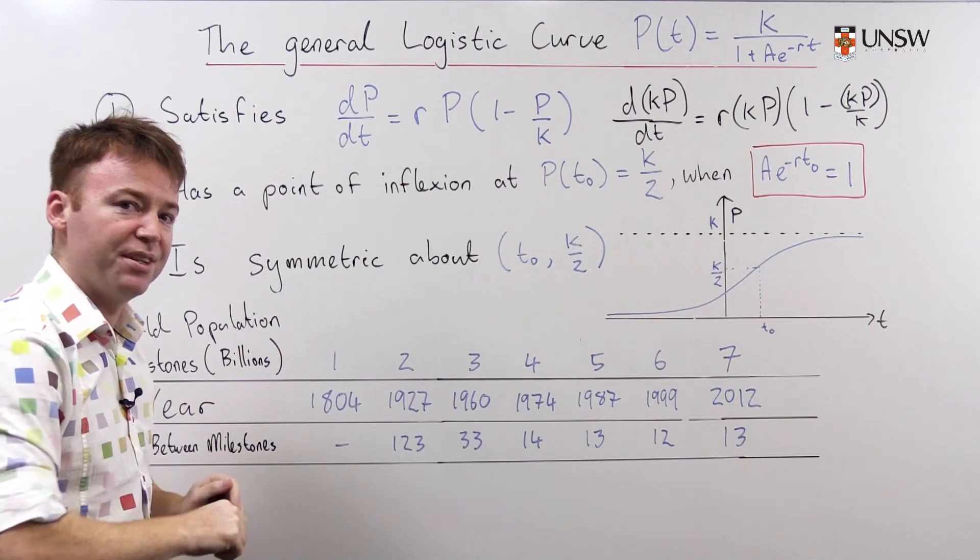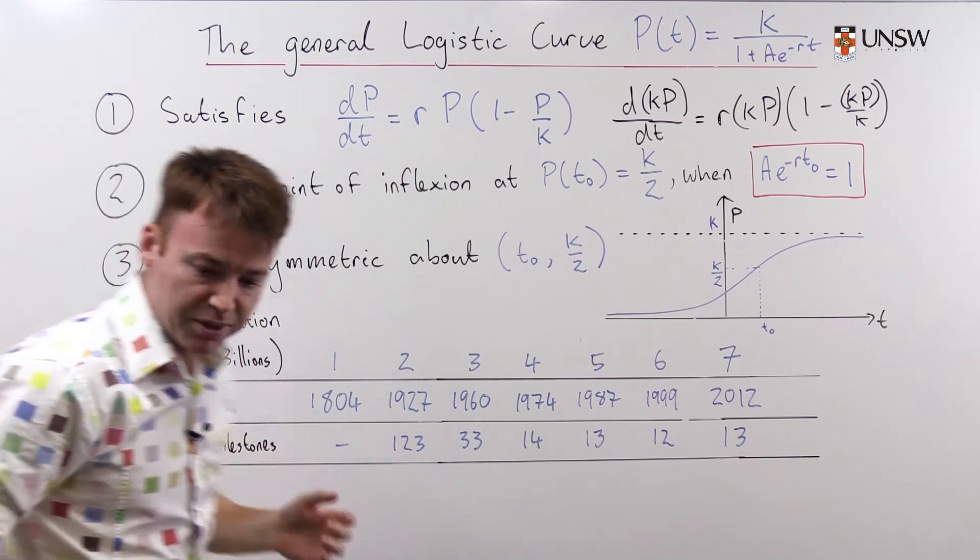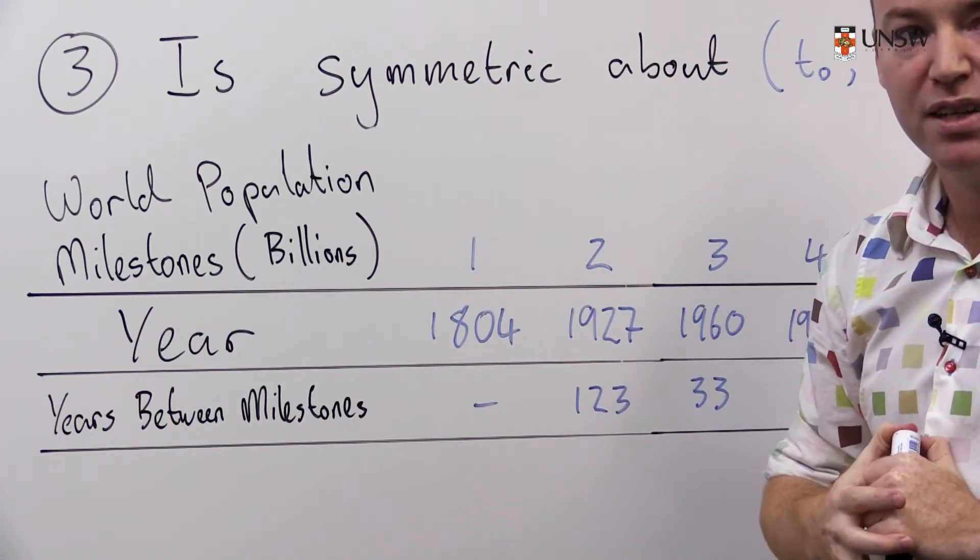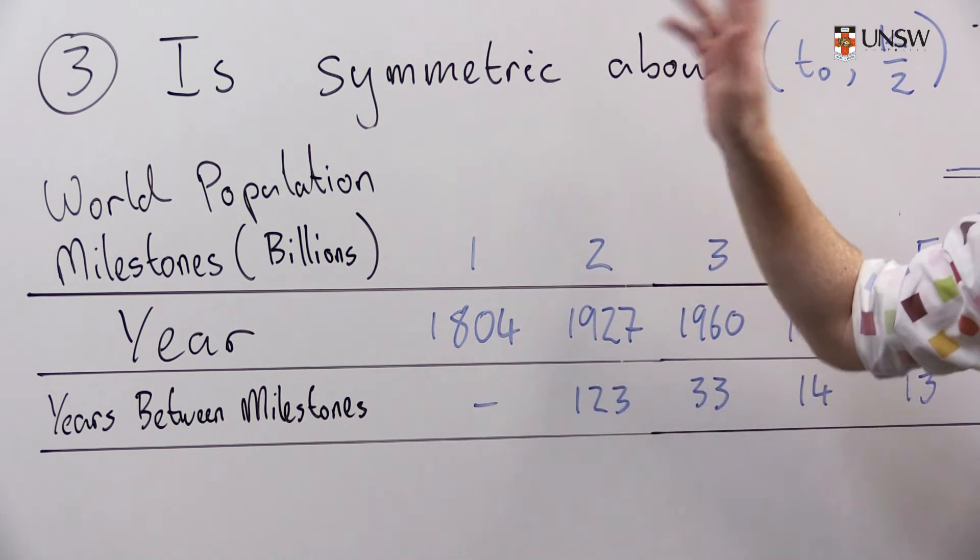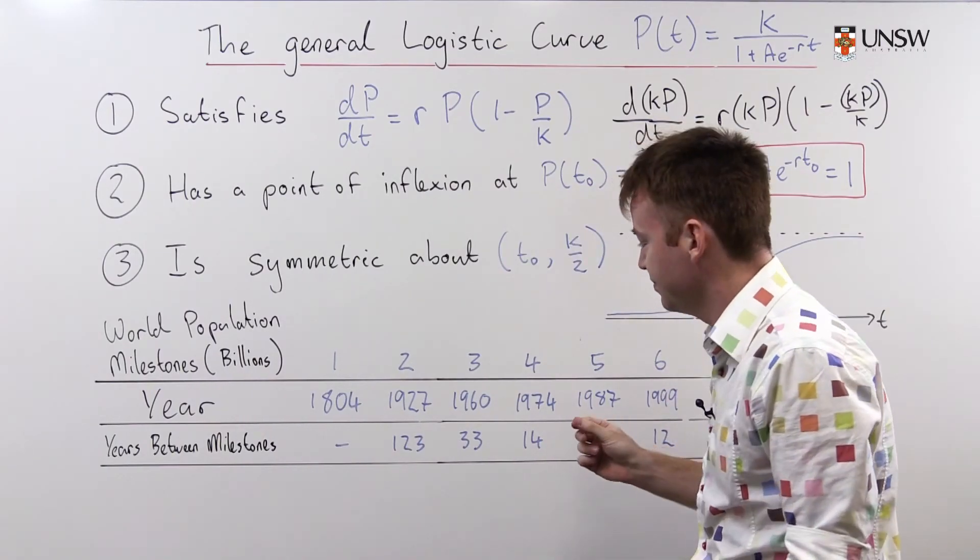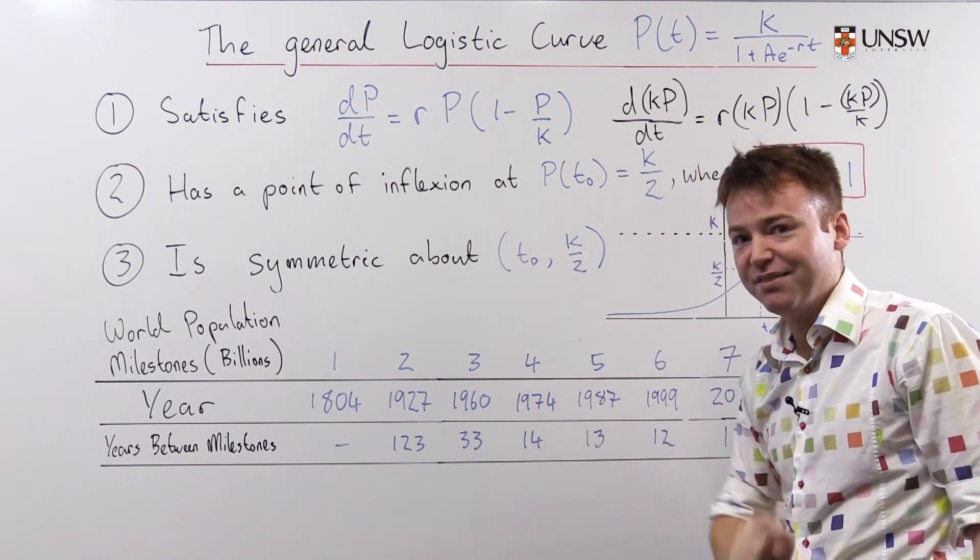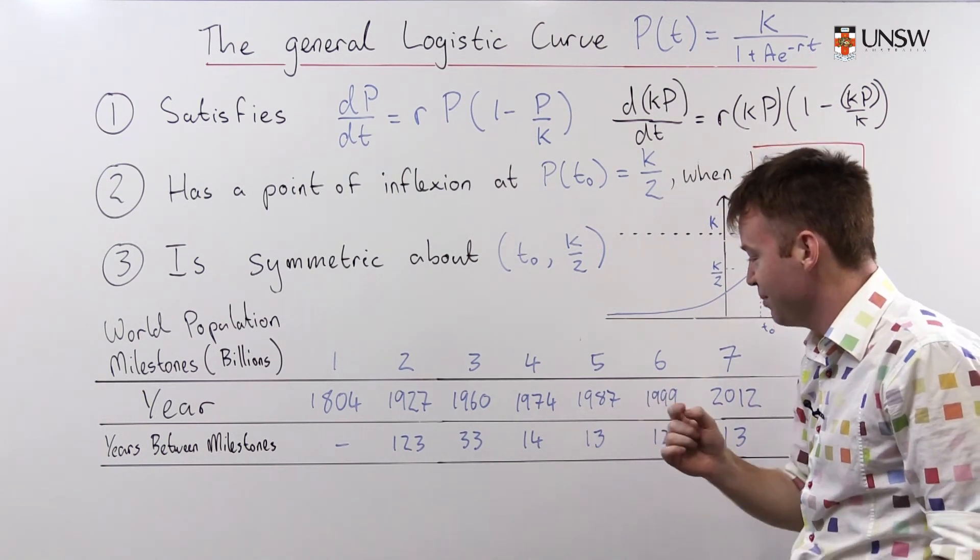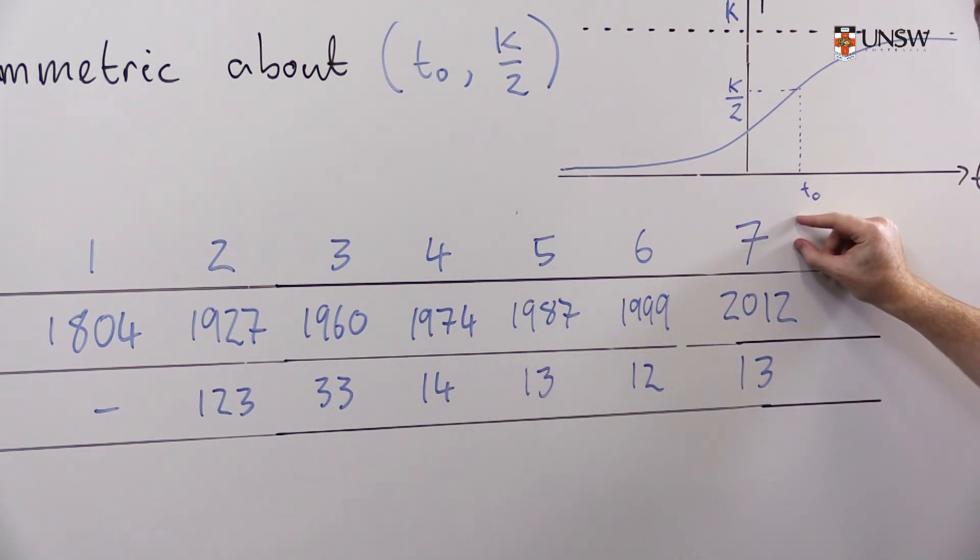This information allows us to make predictions about data which fits a logistic curve. So here we have some world population milestones. The first billion people living concurrently on the world occurred in 1804, and it took some unknown amount of time to get to this first billion. It didn't take too long though to get to the second billion. And in 1927, only 123 years later, we had two billion people living on the world. And then things speed up. In 1960, we had three billion people. In only 1974, we had four billion people. In 1987, we had five billion people. In 1999, there were six billion people. And in 2012, there were seven billion people.